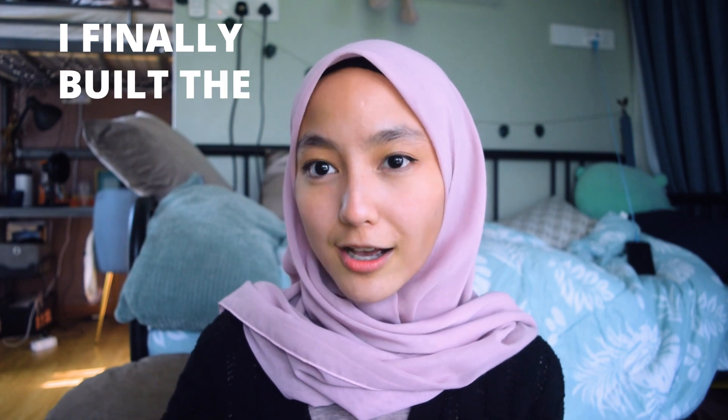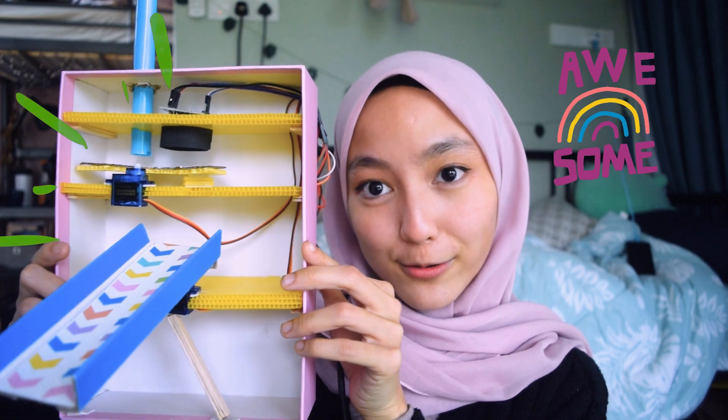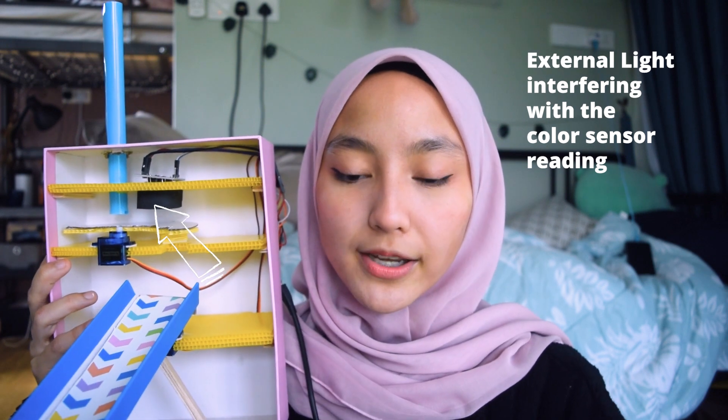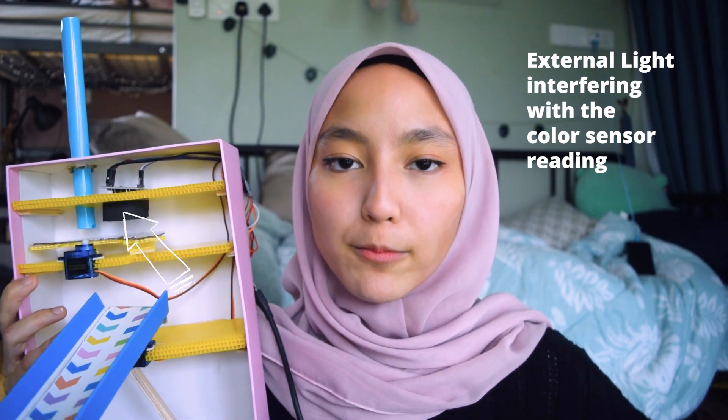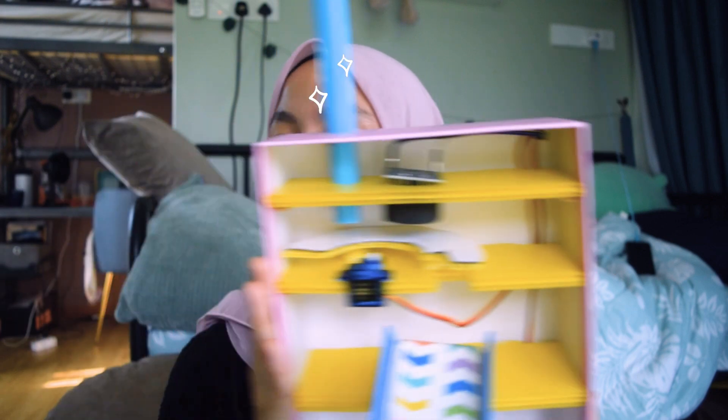Okay, so I finally built the color sorter. Okay, so I actually had to make some changes. I added a shield around the color sensor because I didn't want the external light from interfering with it. I did take some time to do the calibration of the colors, but it did kind of work out. And all that there's left to do is show it to you guys how it works.